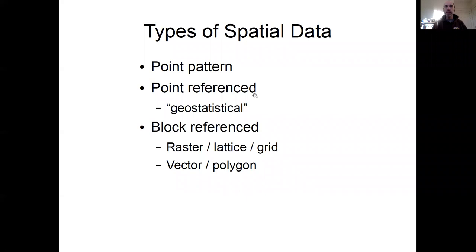And then finally, there's block reference data, which is where you don't have points, but you have areas that have some attribute associated with them. So that could be some grid or raster based data, such as remote sensing, or it could be some sort of vector or polygon reference data, such as from a GIS layer for political units such as countries or states or counties.